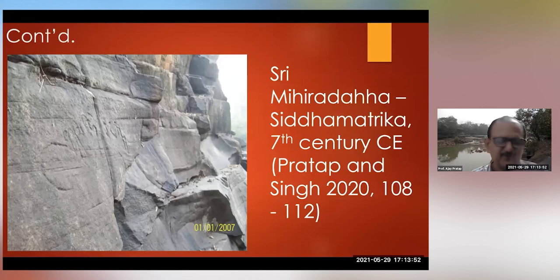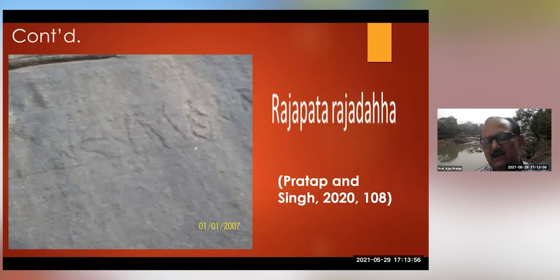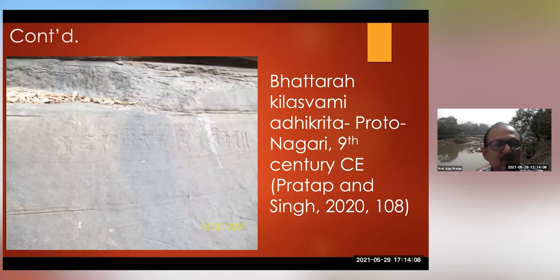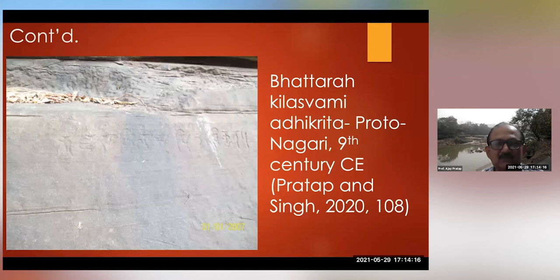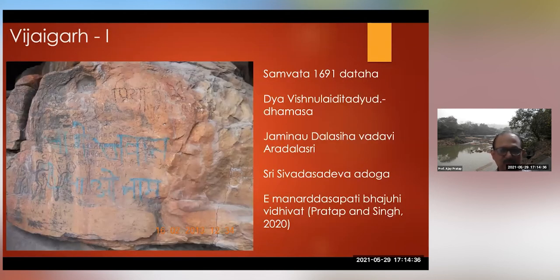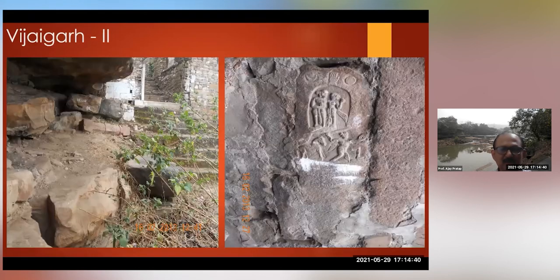One inscription is actually a grant to Bhattara Kilaswami Adhikrita, with this being a sandstone quarry for inscriptions — a couple of inscriptions remain there to indicate the grant of this particular area. Another is a donation to a temple on Vijayagarh fort, also in Brahmi. And there is a hero stone — partly also a sati stone — with an inscription translatable as: son of Sevada, who was the local chief, was killed in action, and therefore his wife committed sati.